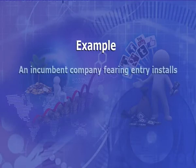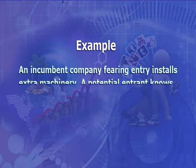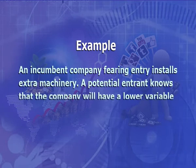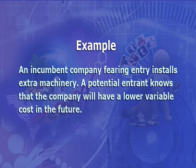For example, an incumbent company fearing entry installs extra machinery. A potential entrant knows that the company will have a lower variable cost in the future. The low cost implies that the incumbent would set a low price if entry occurs, compared to if the incumbent did not have the extra machinery. As a consequence of the incumbent's extra capacity and lower cost, the potential entrant would receive a lower price. Under the right conditions, the entrant's price would be too low to cover all costs, so it would choose not to enter. Thus, the incumbent's decision to install extra machinery prevents entry.